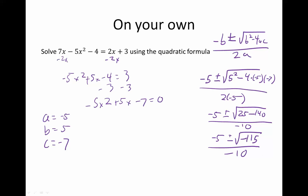So the only thing we need to take care of is this negative. So the negative comes out as an i, leaving the square root of 115 in there. And then that is under negative 10.